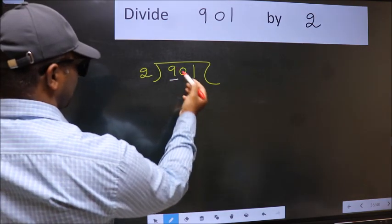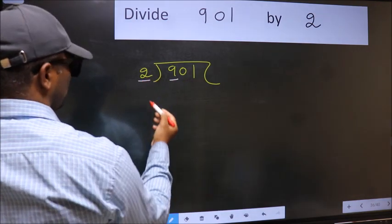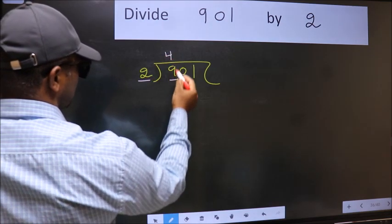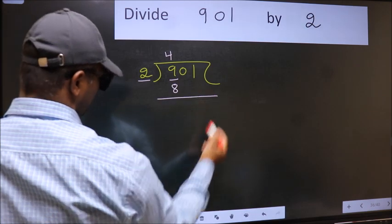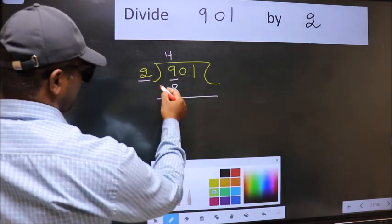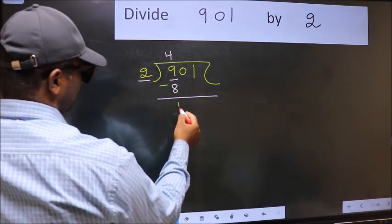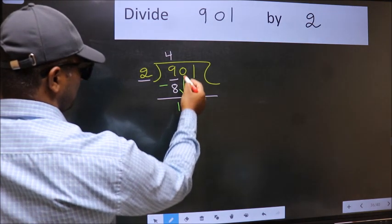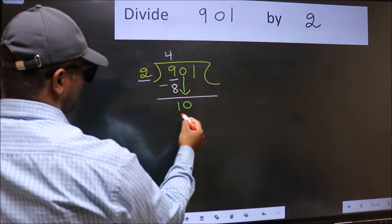Here we have 9 and here 2. A number close to 9 in 2 table is 2 fours 8. Now we should subtract. 9 minus 8, 1. After this, bring down the beside number. So 0 down. Now 10.